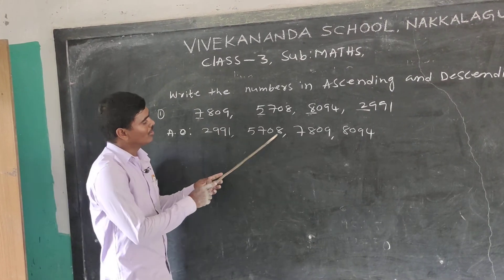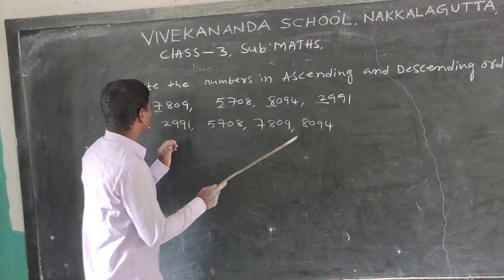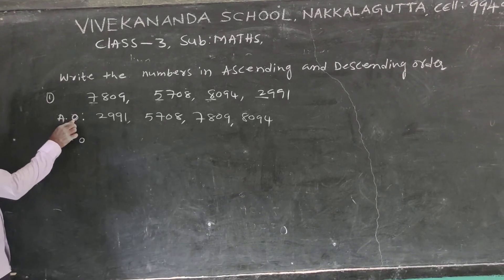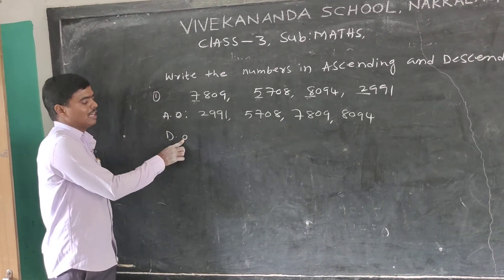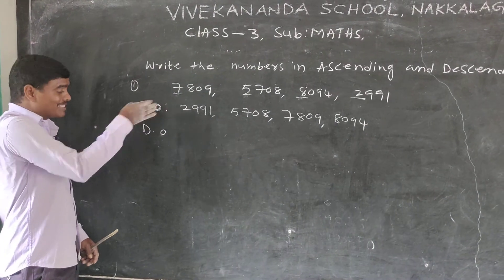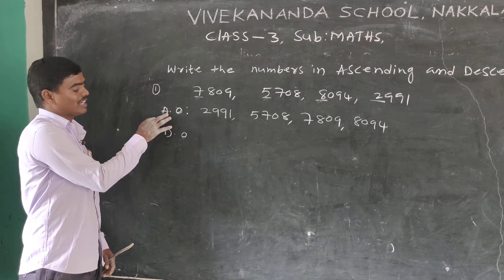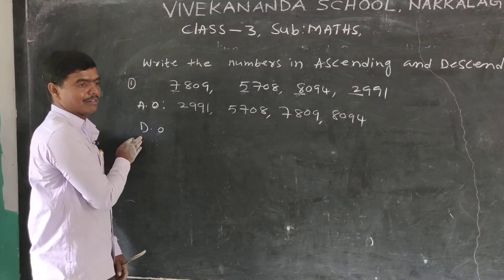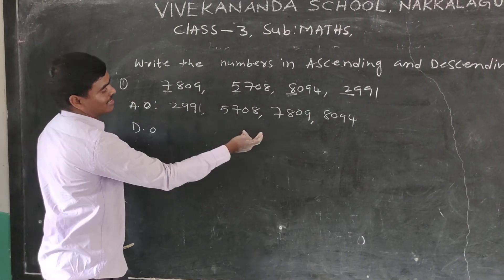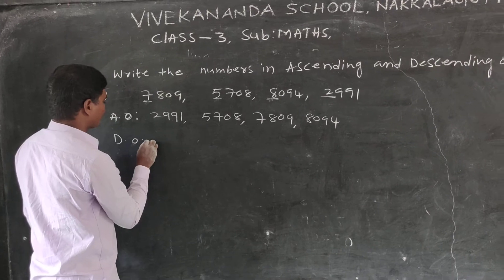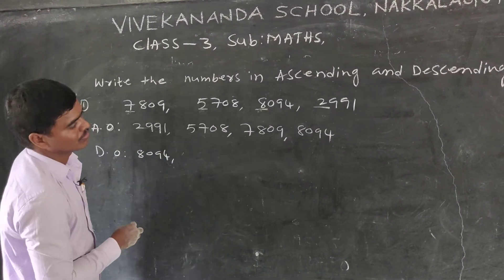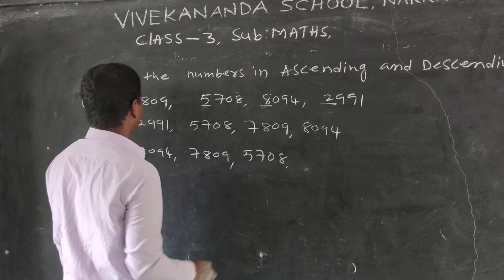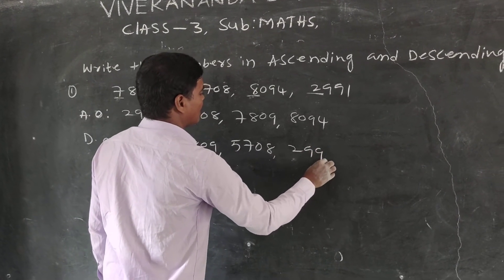Now the opposite — descending order. A-O means ascending order, D-O means descending order. Descending order is the opposite of ascending order. So if ascending order was 2991, 5708, 7809, 8094 — the descending order is: 8094, 7809, 5710, 2991.